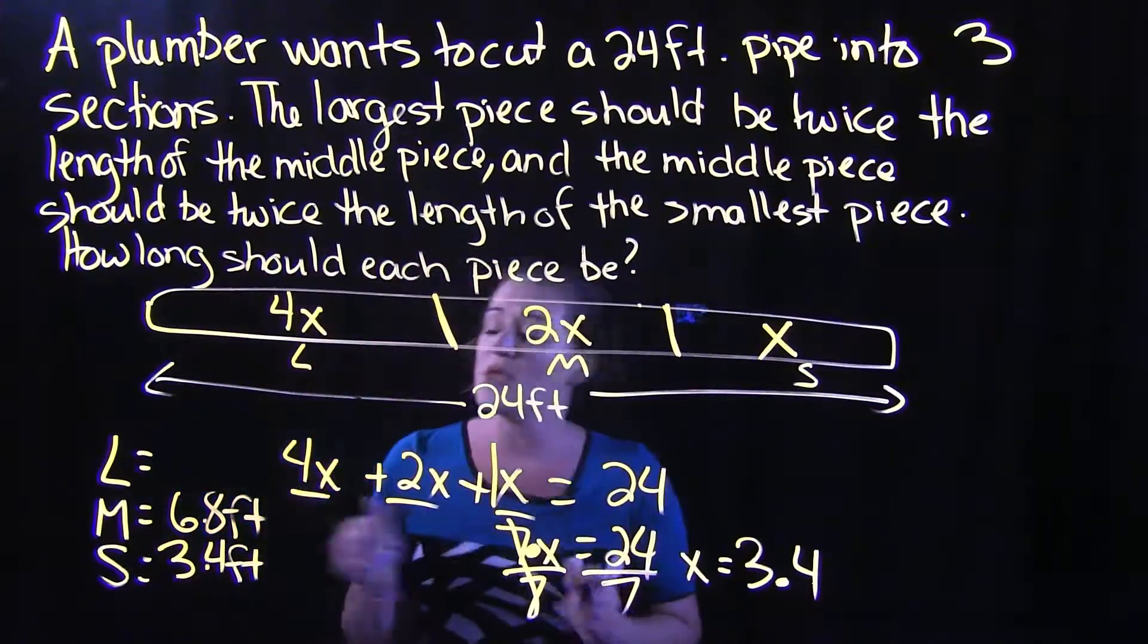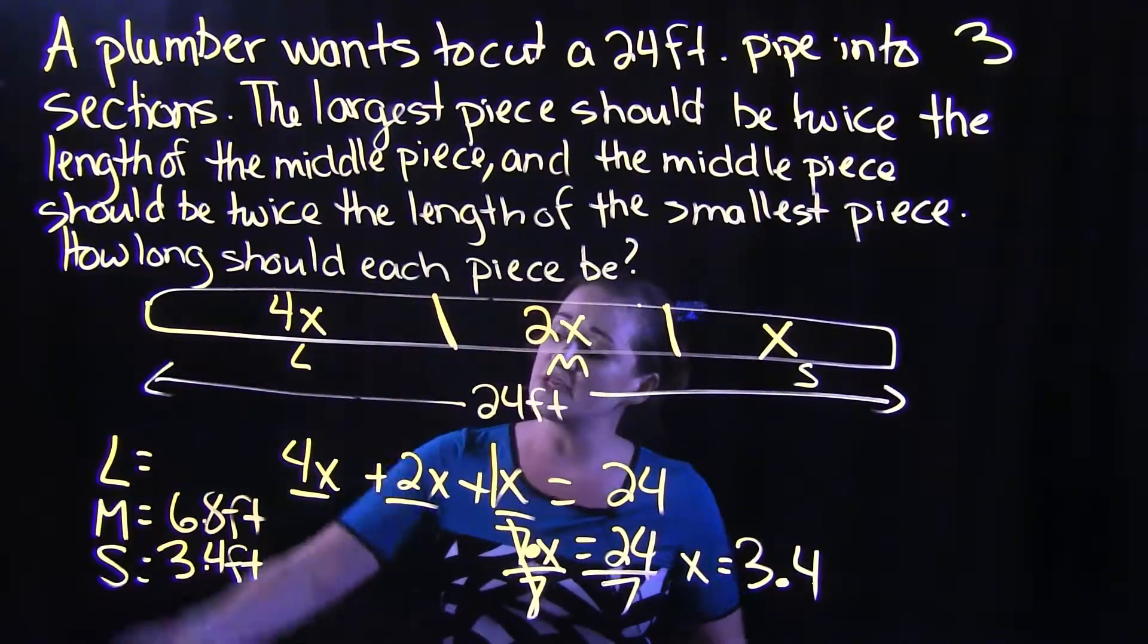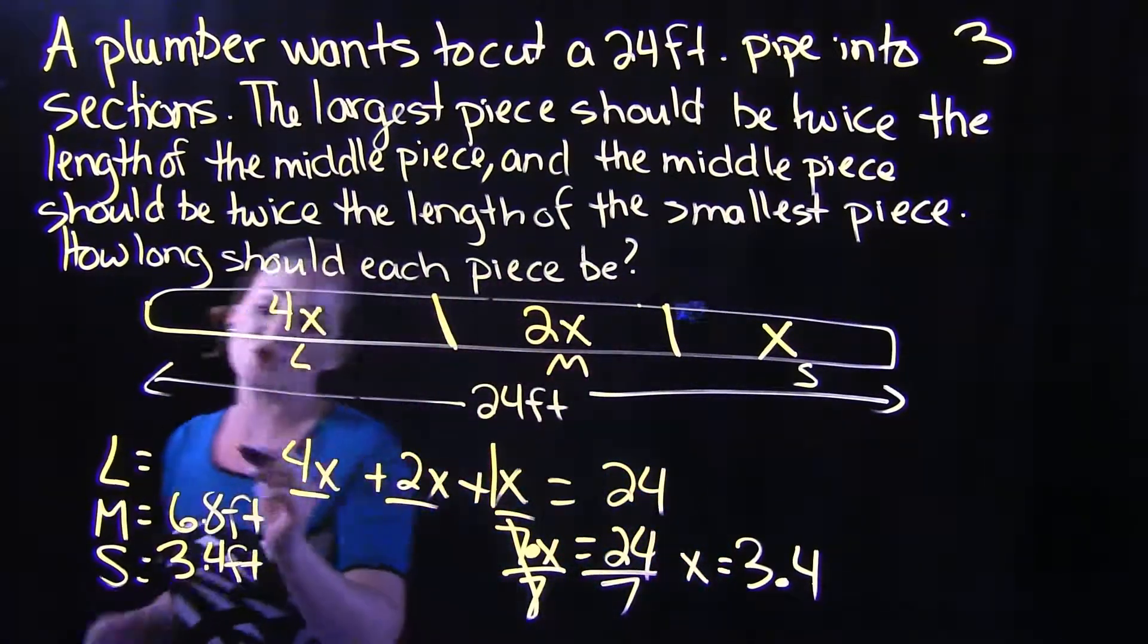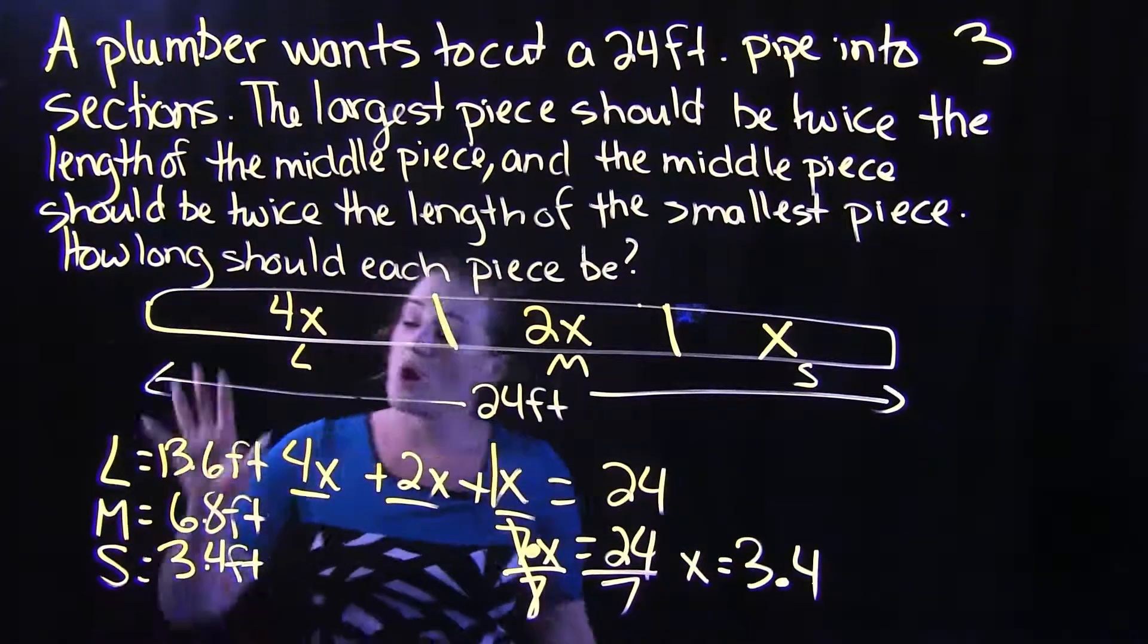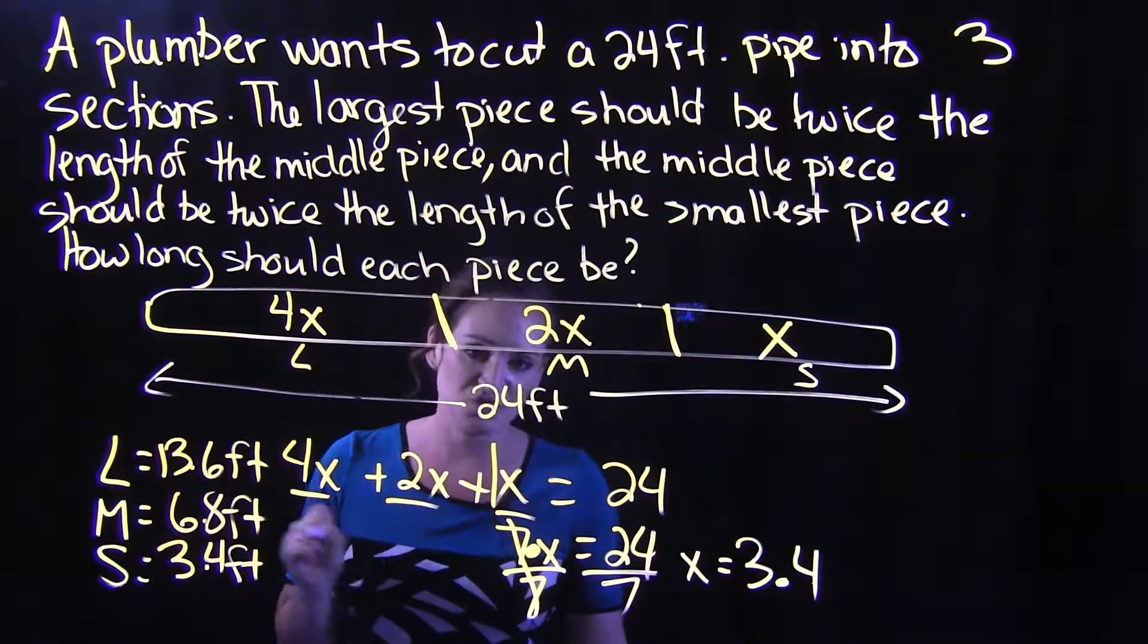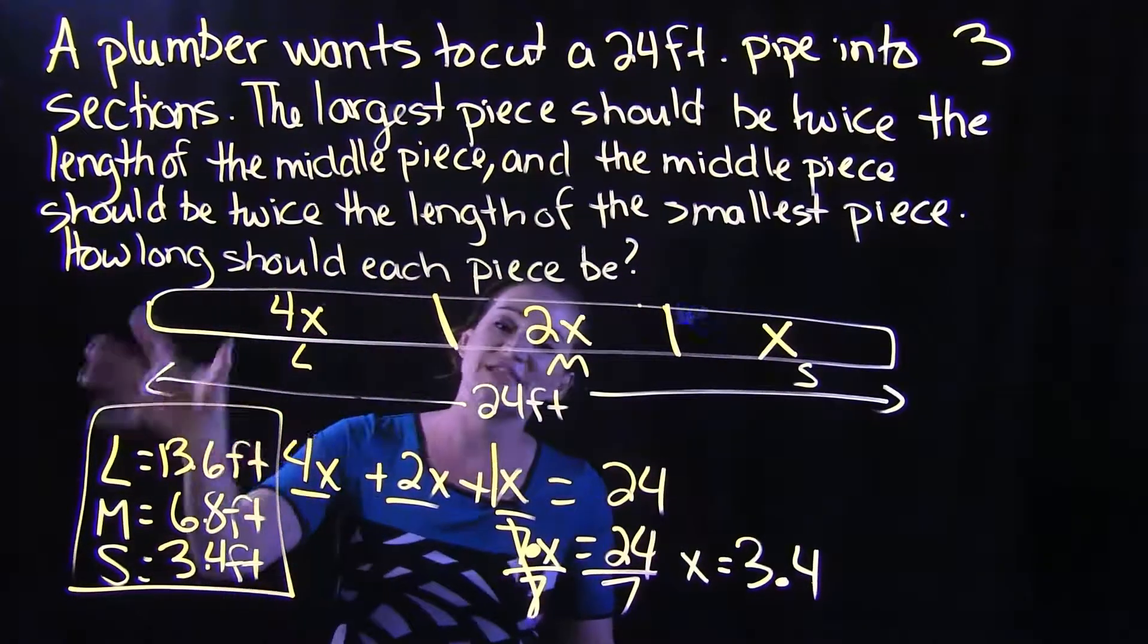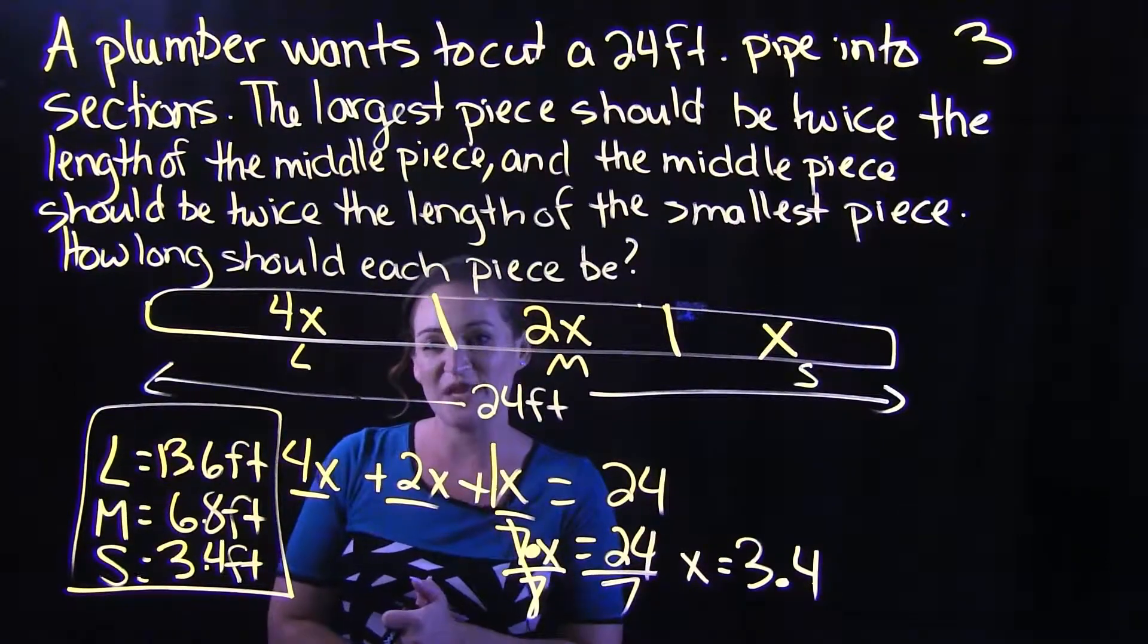And the large piece is going to be double that. So if we take 6.8 and multiply that by 2, we get 13.6. So our large piece is 13.6 feet, middle piece is 6.8 feet, small piece is 3.4 feet. So now we know the lengths of all three of these pieces of pipe. That is it for this video.